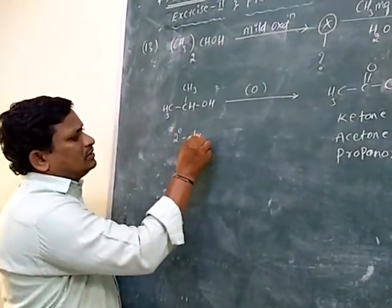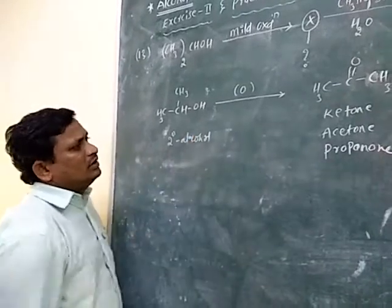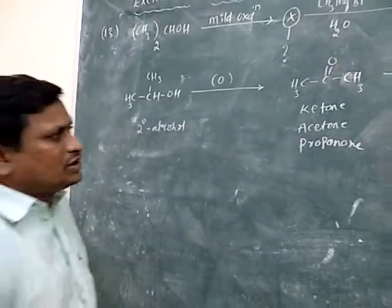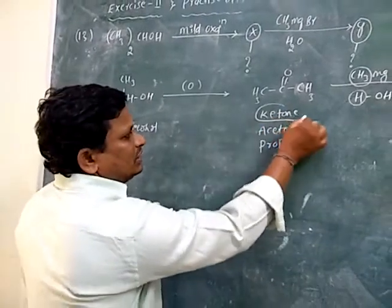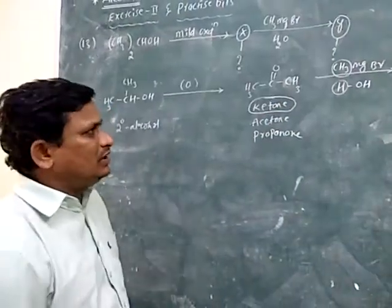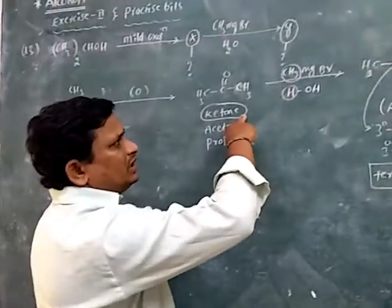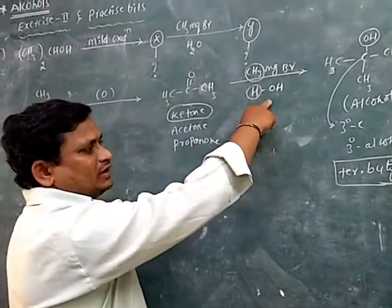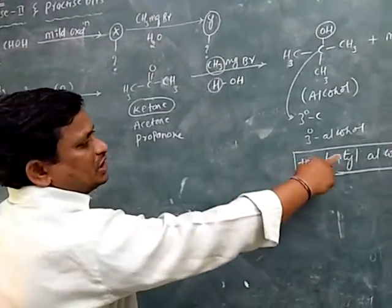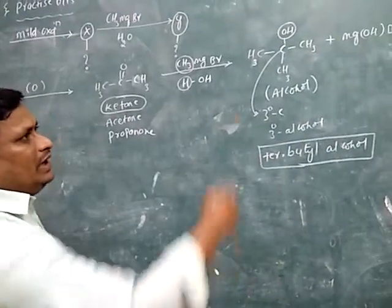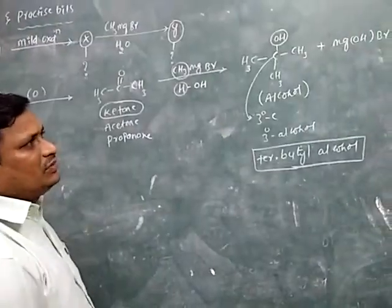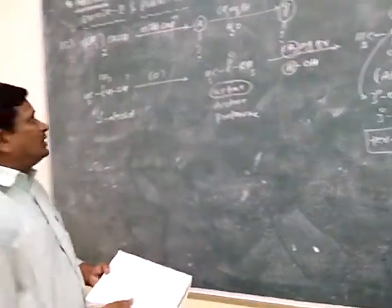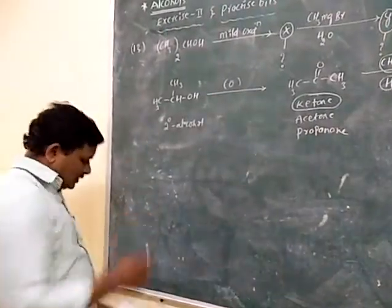This alcohol is a secondary alcohol involved in mild oxidation, giving the ketone. The ketone treated with Grignard reagent on hydrolysis gives tertiary butyl alcohol. The byproduct is magnesium hydroxy bromide.